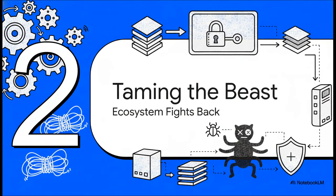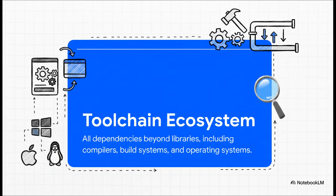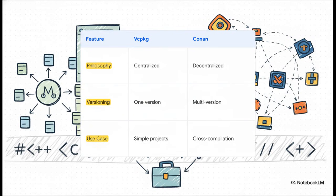So with the language itself not offering a solution for a long, long time, what do you do? Well, the community did what it always does. It stepped up. Developers started building layers of tooling on top of this fragile foundation just to manage the chaos. And the first big beast they had to tackle was the problem of external libraries. And I want to be really clear here. We're not just talking about a couple of code libraries. The problem is the entire toolchain ecosystem. We're talking about the compiler version, the operating system, the build tools. All of these moving parts have to align absolutely perfectly for anything to work.